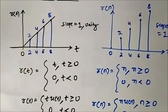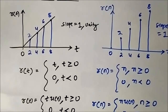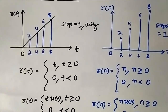So this is the discrete time and continuous time representation of the unit ramp function, which is the second elementary signal we have discussed. There are around 6 more elementary signals to cover, and we will discuss them one by one. I hope you liked this video — please subscribe to Engineering Tutorial for more videos related to electrical, electronics, instrumentation, and communication engineering. Thank you very much.